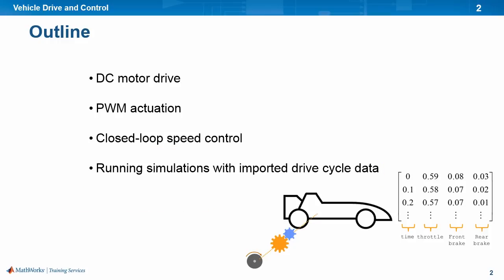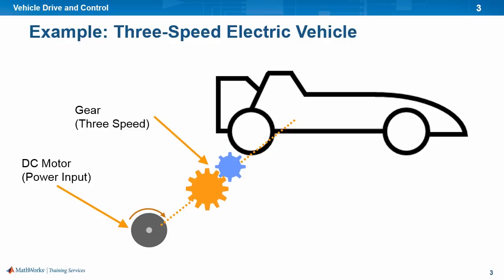We would also like to acknowledge and thank the Virginia Tech Formula Student team for providing us with data about the vehicle, motors, engines, and batteries for us to use in this training. As an example, we will modify the existing vehicle model into an electric vehicle. This has an electric motor that provides the power input instead of a combustion engine.